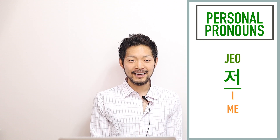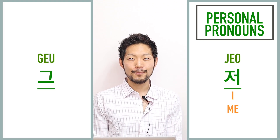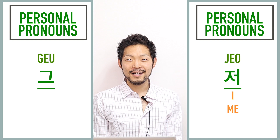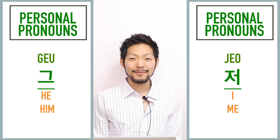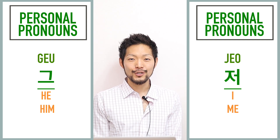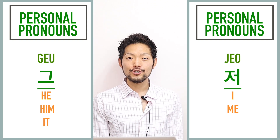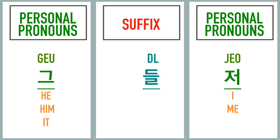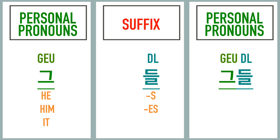Just like 저 can be used as the personal pronoun 'I' or 'me,' 그 can also be used as a personal pronoun — more precisely as a third person singular masculine pronoun meaning 'he' or 'him.' Depending on the context it can also mean 'it.' And if you add the suffix 들 at the end, which makes nouns and pronouns plural, you get 그들, meaning 'they' or 'them.'